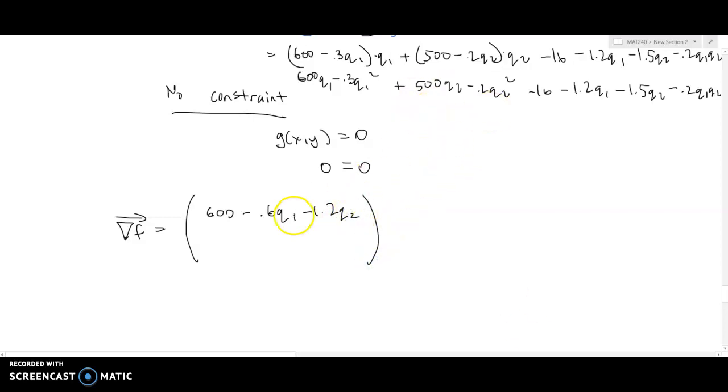Our partial with respect to q2 is going to be, the derivatives of the q1 terms are 0, then we'll have 500 as the derivative of 500q2, minus 0.4q2 squared, minus 0, minus 0, minus 1.5.